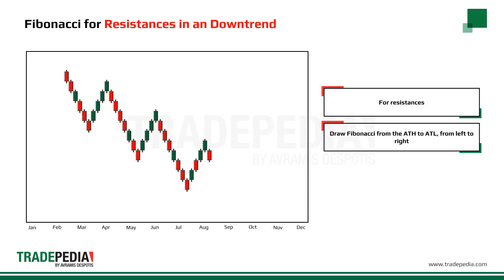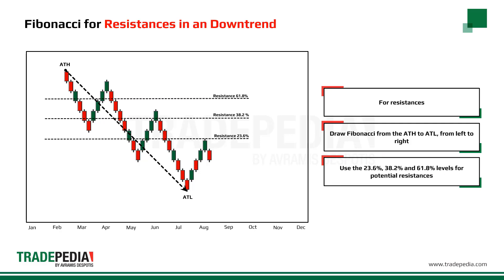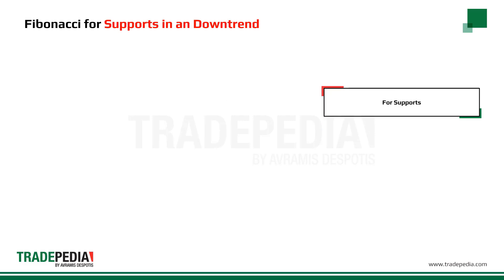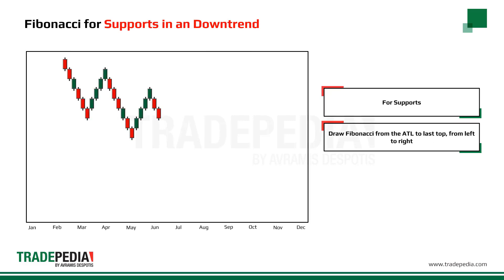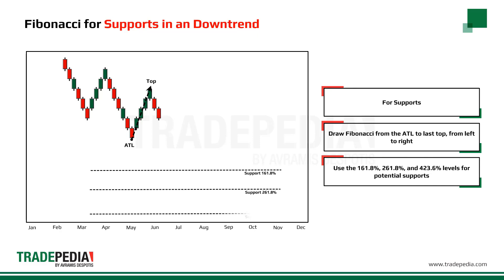In the case of a downtrend, draw Fibonacci from the ATH to the ATL, always from left to right. Use the 23.6%, 38.2%, and 61.8% levels for potential resistances. For supports in a downtrend, draw Fibonacci from the ATL to the last top, always from left to right, and use the 161.8%, 261.8%, and 423.6% levels for potential supports.